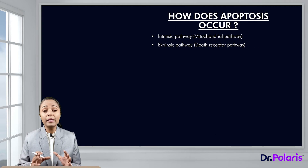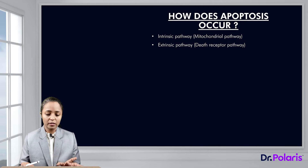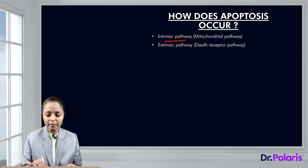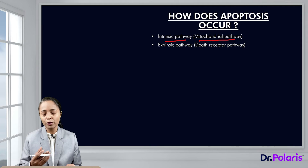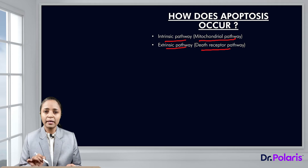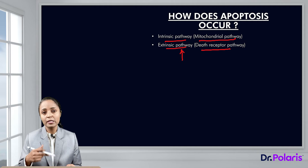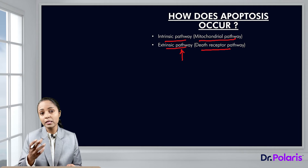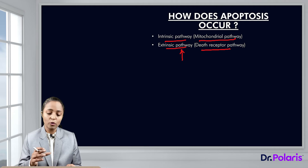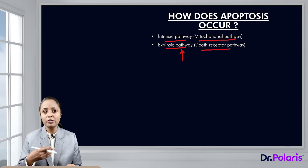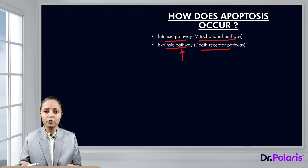Now, the mechanism by which apoptosis occurs involves two main pathways. One is the intrinsic pathway, which is the mitochondrial pathway — as the name suggests, mitochondria is involved. The other is the extrinsic pathway, also known as the death receptor pathway. The extrinsic pathway occurs in the example of a virally infected cell, because another cell is telling the immune cells to activate apoptosis from outside. In the intrinsic pathway, the inherent machinery of the cell itself is activated.